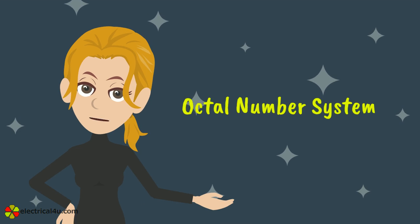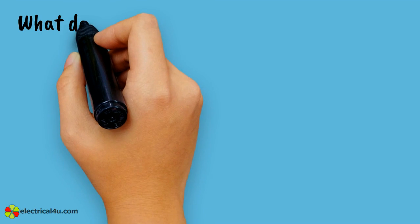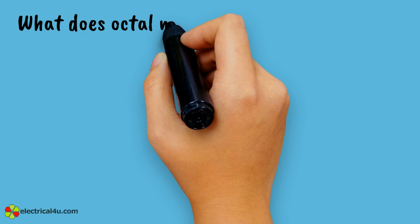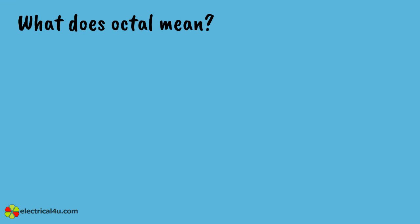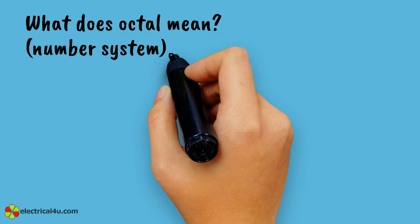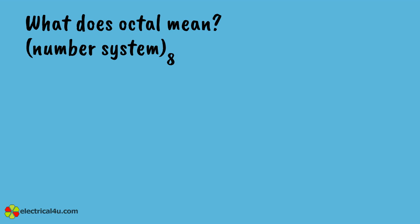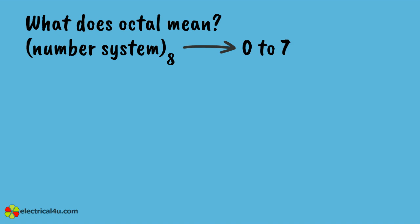We are going to discuss the octal number system. Octal means it is a number system having 8 as its base or radix. The octal numeral system, or oct for short, is the base 8 number system and uses the digits 0 to 7.